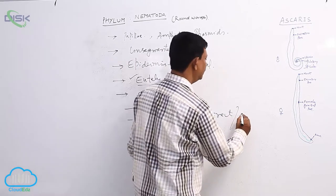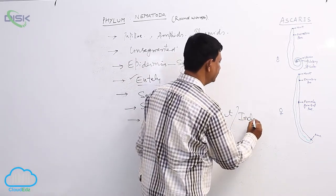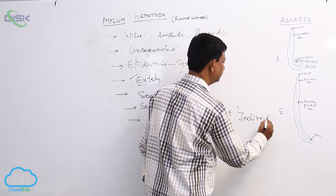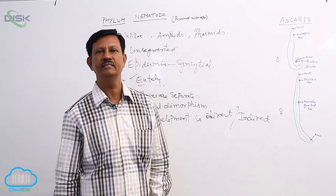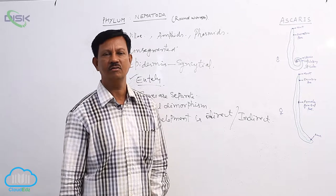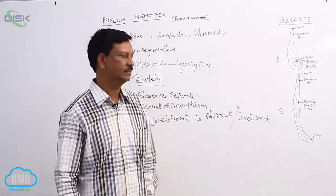In some animals, development contains larval forms. They are known as the indirect development. Usually there are four moltings that take place in the larvae and then it becomes into adults.